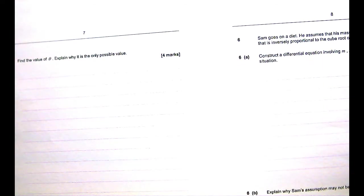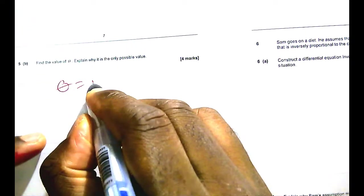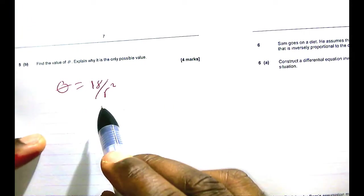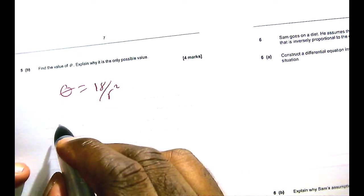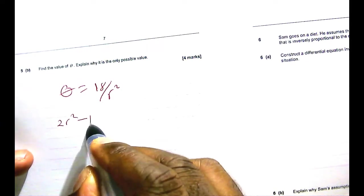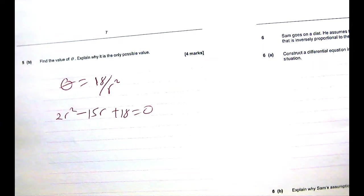We move to question 5B, which says: now find the value of θ. So question 5B is building on what we have just done in question 5A. Of course, if you are going to solve for θ, which we have already called θ equals 18 over R², it means you need to know what R is. So going back to the formula we were told to prove, which was 2R² - 15R + 18 = 0, can we solve for R? Yes. Let's solve for R.